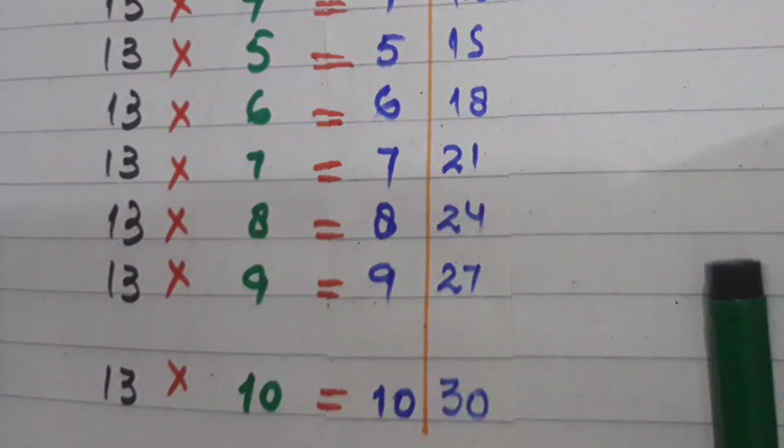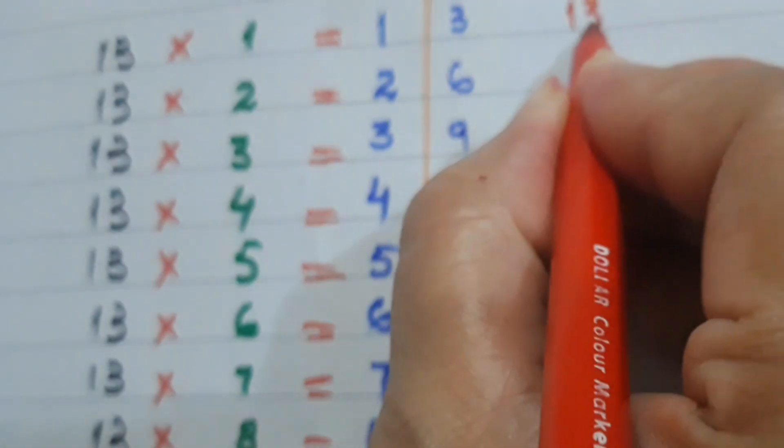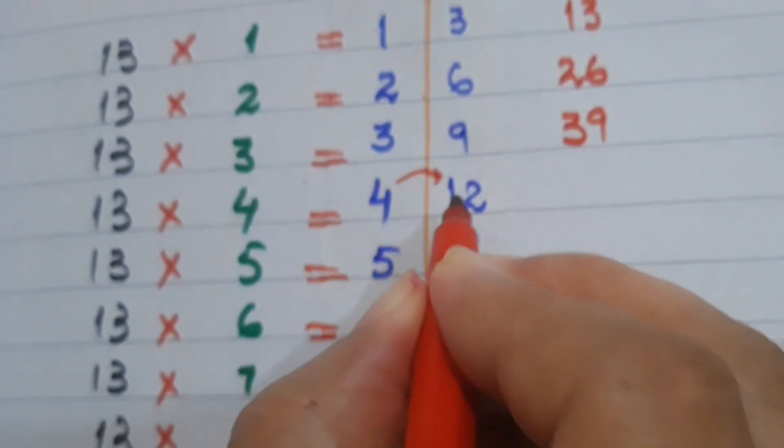Now how can we write these numbers so we will get the answer of the table of 13? Now let's see. We will write the number in this form: just 1-3 becomes 13, 2-6 becomes 26, 3-9 becomes 39, and so on.